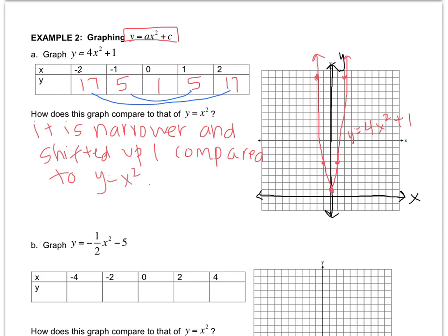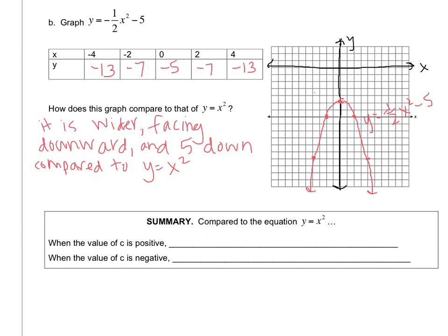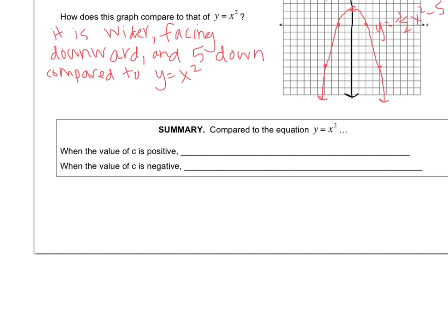Pause the video and do letter B on your own. All right, let's wrap this up and talk about what the value of C does to a graph. I know we've talked about it, but let's just summarize it all together. When the value of C is positive, the graph shifts up. And when the value of C is negative, the graph shifts down.